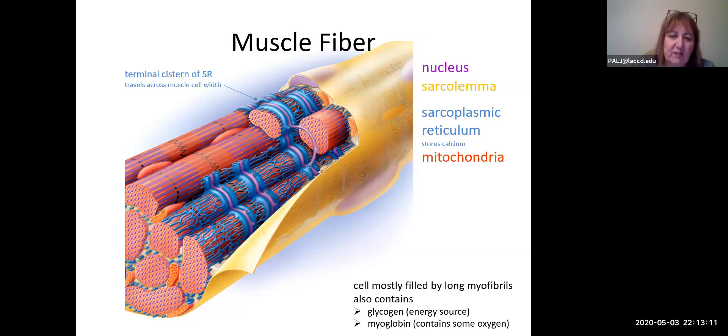What are all these red and pink structures? These are all long myofibrils we're going to learn about in a few slides. In addition, there's going to be glycogen in this cell because the stored form of glucose is glycogen, and there's also going to be the protein which contains oxygen called myoglobin. We're not going to talk about those for a while.